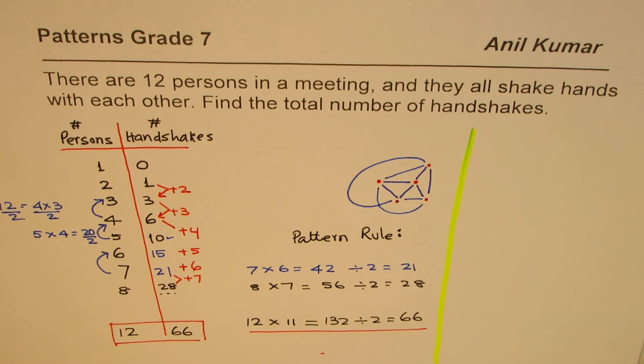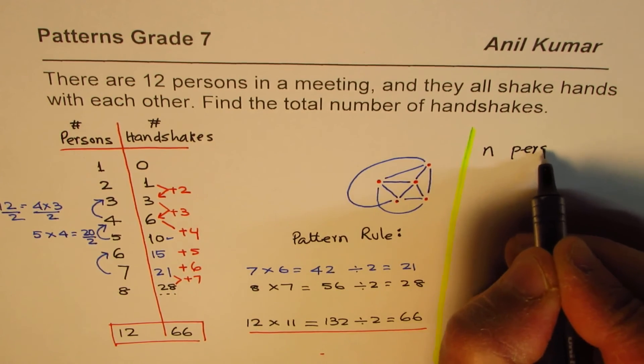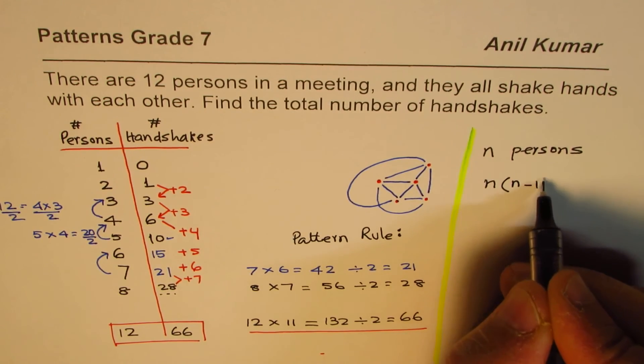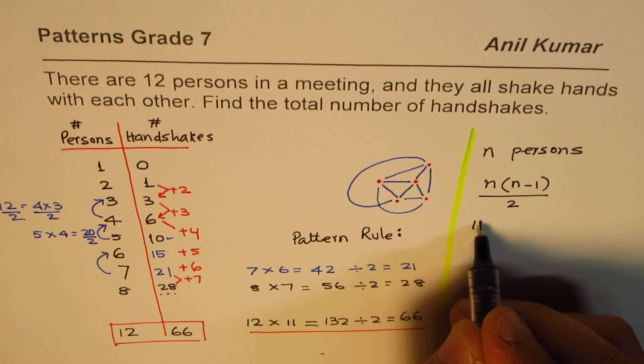So here we are saying that if there are n persons, in that case n times (n minus 1) divided by 2 is the number of handshakes.